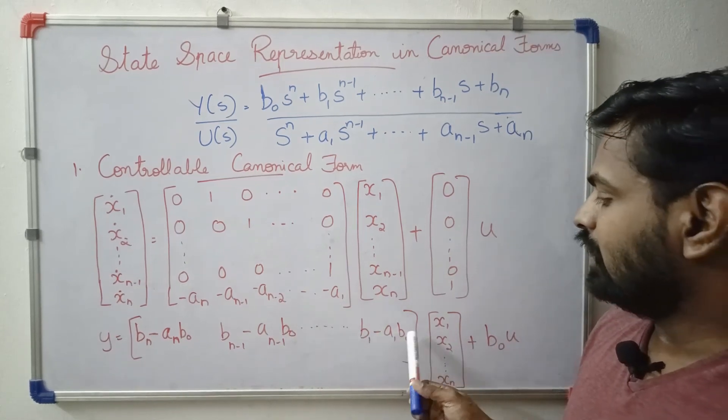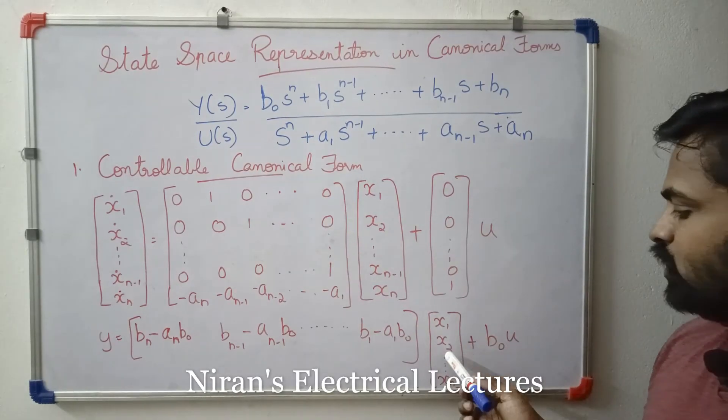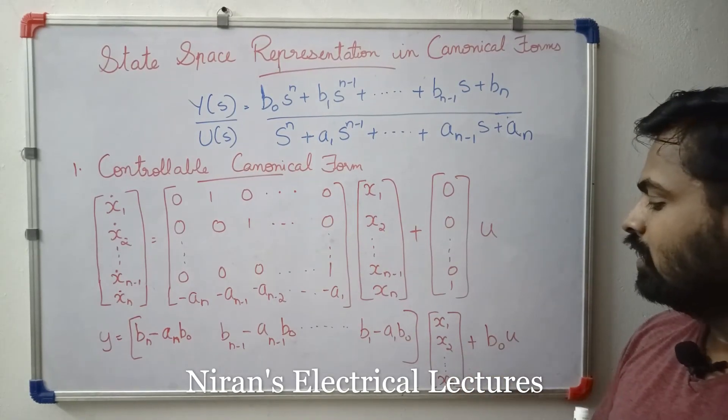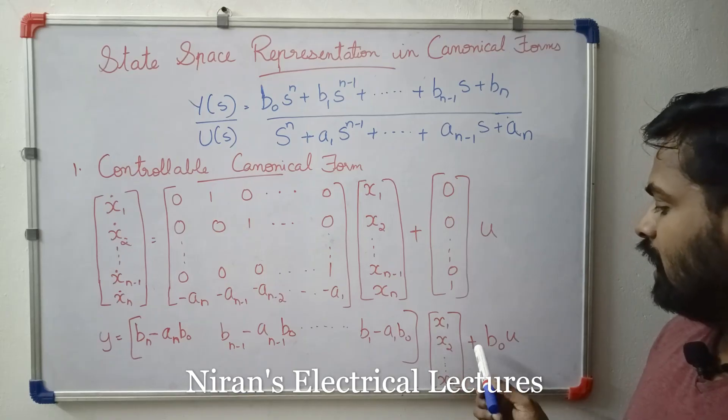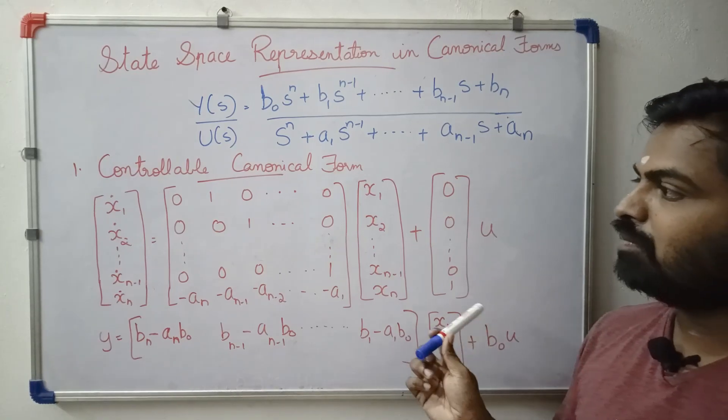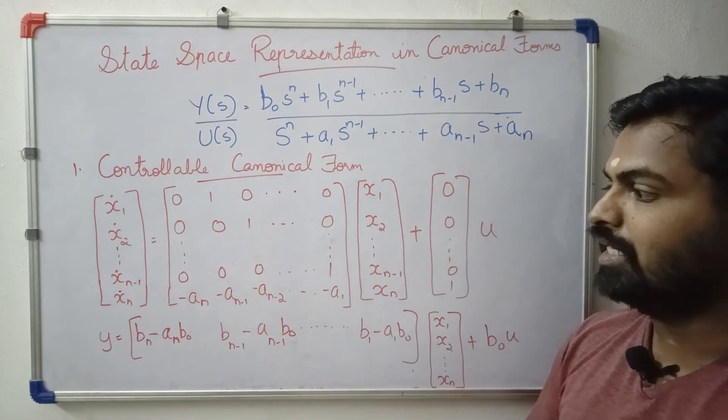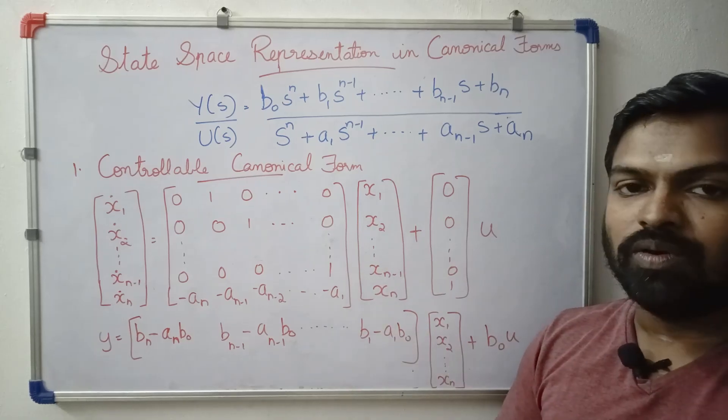b1 minus a1 times b0. Here we have x1, x2, etc., up to xn state variables, plus b0. Here we have the general equation. This is the controllable canonical formula.